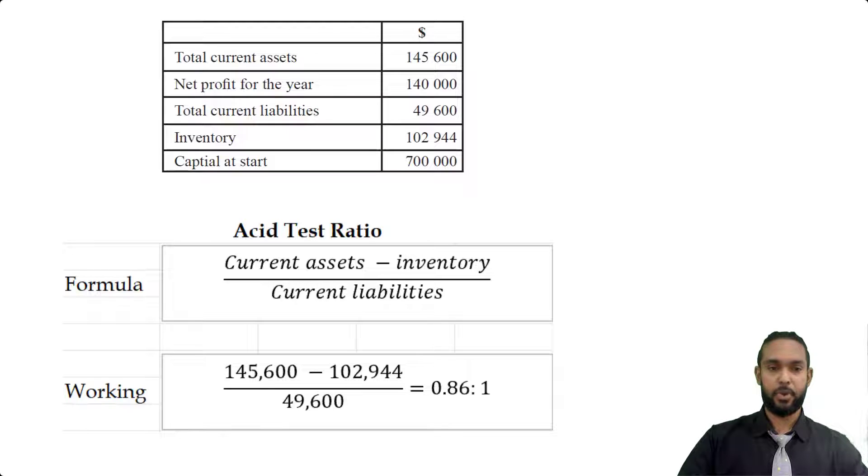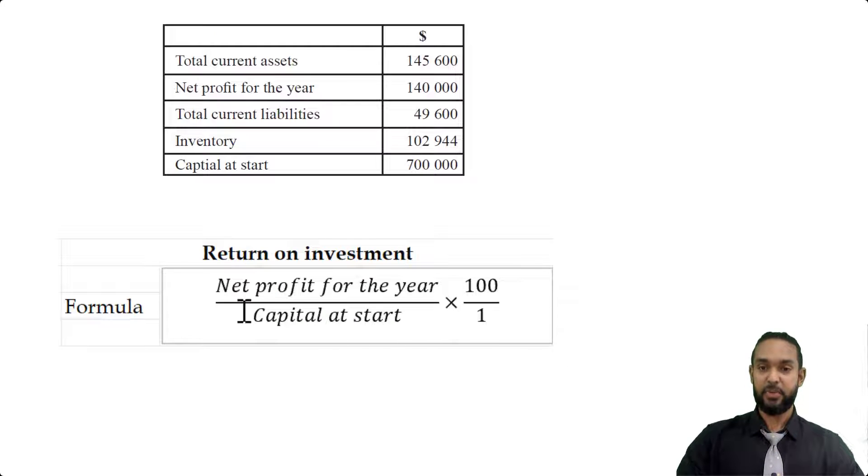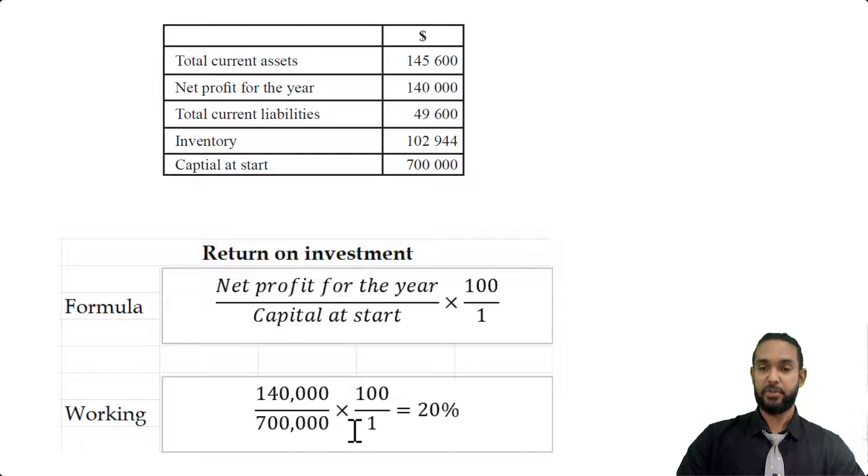What about the next question? So what they want us to find here is a return on investment. And just like in the previous question, they want us to show the formula and the working. So let's scroll back up to take a look at the information. So for return on investment, we have to use net profit for the year over capital at start multiplied by 100 to express it as a percentage. So the net profit is 140, capital at start is 700. So that's what we're going to see here. 140 over 700 by 100 is 20%.